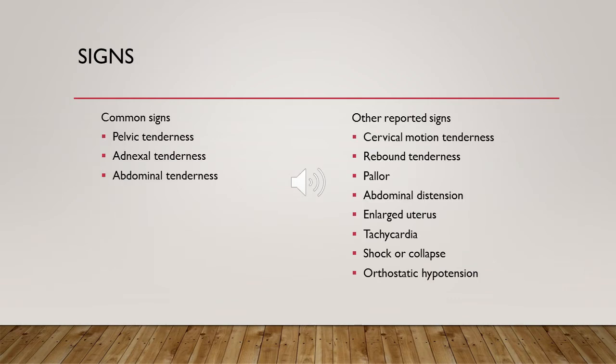Signs of ectopic pregnancy: the most common signs are pelvic tenderness, adnexal tenderness, and abdominal tenderness. Other reported signs include cervical motion tenderness or cervical excitation, rebound tenderness or peritoneal signs, pallor, abdominal distension, enlarged uterus, tachycardia more than 100 beats per minute, hypotension less than 100 over 60 mmHg, shock, collapse, and orthostatic hypotension.